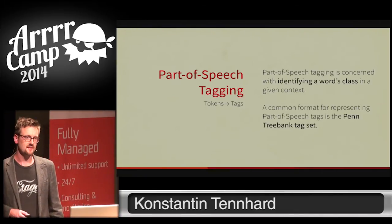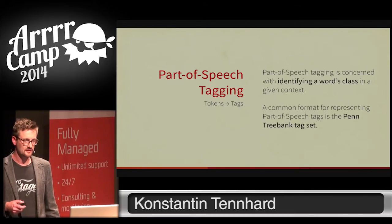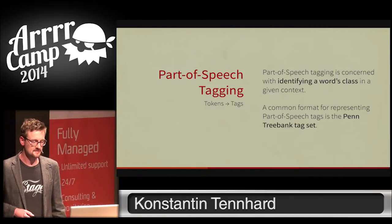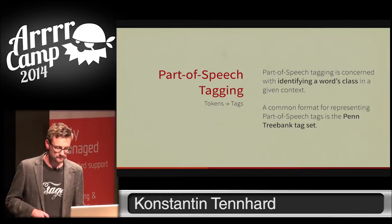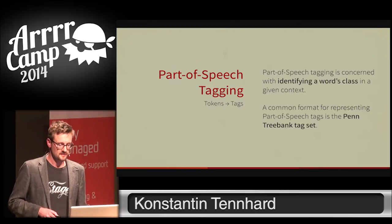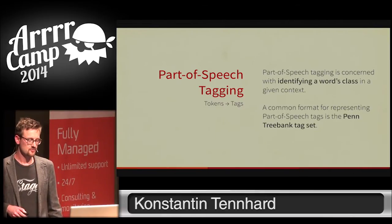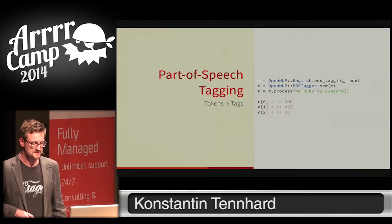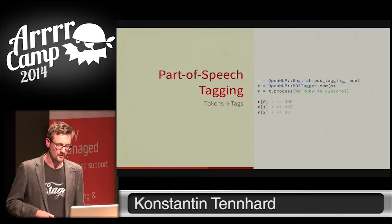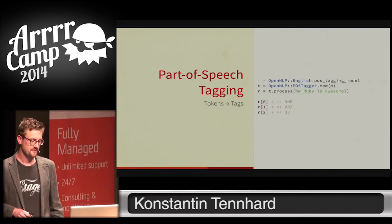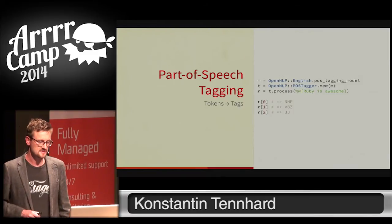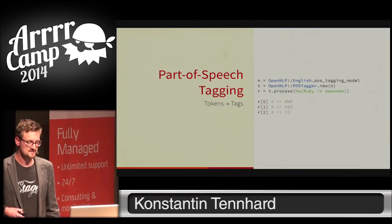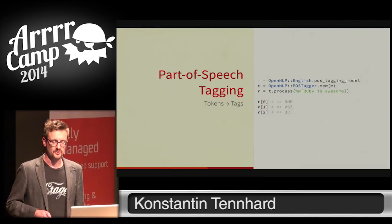Another important preprocessing task is part of speech tagging, which is concerned with automatically detecting the correct word class of a given word. The result is given back encoded in the Penn Treebank tag set format. Again, the usual three steps — and what we get back is an array where each item corresponds to one token. For example, 'Ruby' is tagged as NNP (proper noun), 'is' is tagged as VBZ (verb in present tense), and the last word is tagged as an adjective.